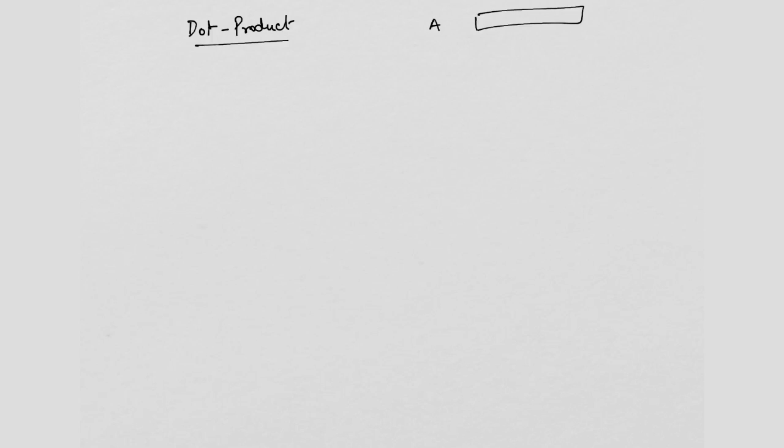Let us start with some very simple BLAS level 1 routines. I will just cover a few as examples and show how you can parallelize them. Let us start with dot product — something we have already seen. We are given two vectors A and B and we want to compute the dot product Y = A · B.